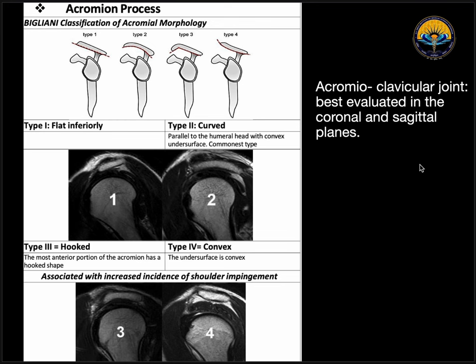Next is the acromion process. On axial sections, we can see the acromion, and based on its morphology, we have the Bigliani classification. Type 1 means the acromion is flat inferiorly. Type 2 means it is curved concavely. Type 3 means there is a hook. Type 4 means it is convexly curved. Type 2 is the most common. Types 3 and 4 are associated with increased incidence of shoulder impingement, as they cause impingement over the supraspinatus muscle.